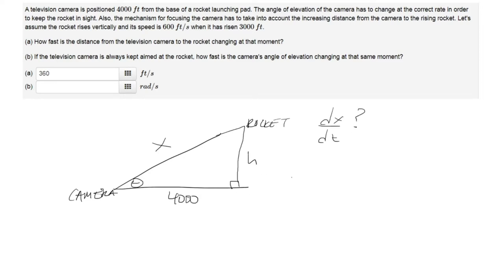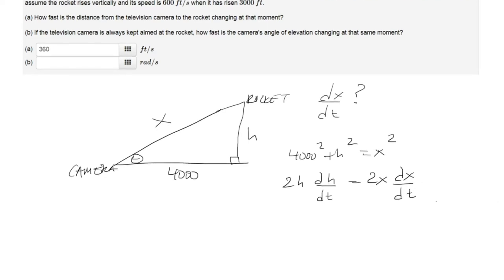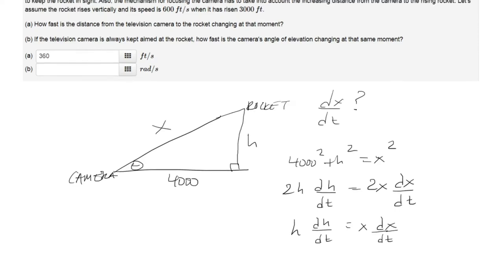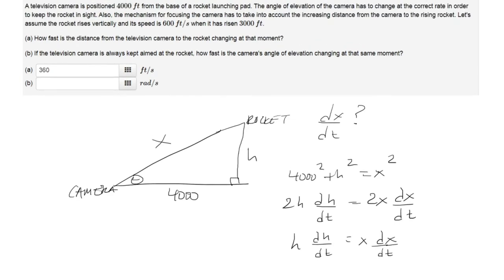We can use the Pythagorean theorem to say that 4,000 squared plus h squared is equal to x squared. I want the derivative of x with respect to t, so let's take the derivative with respect to t. We get 2h times dh/dt equals 2x dx/dt. The 2s cancel and I'm left with h times dh/dt equals x times dx/dt.